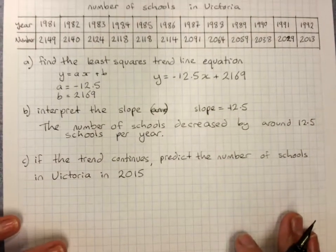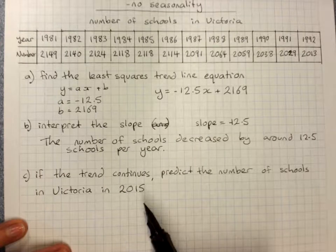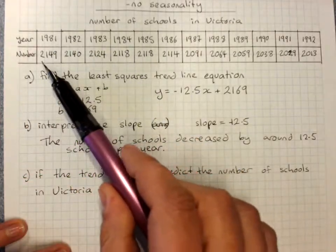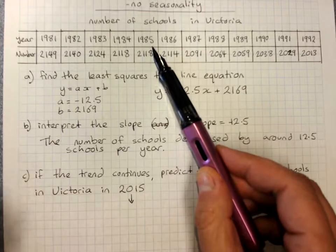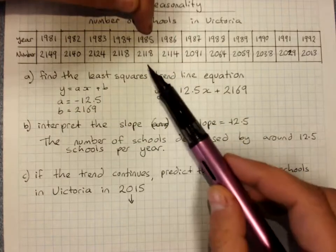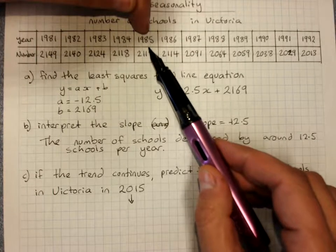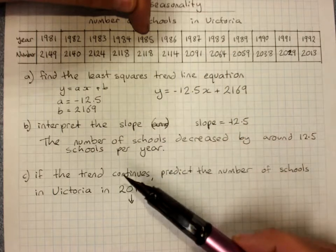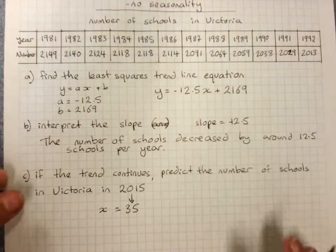If the trend continues, predict the number of schools in Victoria in 2015. Now just be aware, of course, that we can't just use 2015. Because we do have to work out what number we've used for that. So easiest way is to go to the first year we've got that ends in the same number. And then count on in tens. So this is 1, 2, 3, 4, 5. So of course, 85 is at 5. 95 will be at 15. 2005 at 25. 2015 will be at 35. So our x value is 35 for working this out.